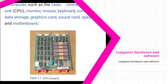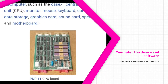System software is a set of one or more programs designed to control the operation of a computer system. These programs do not solve specific problems. They are general programs written to assist humans in the use of the computer system by performing tasks.